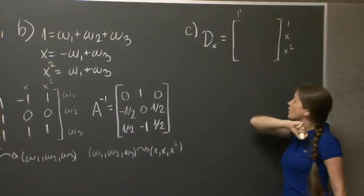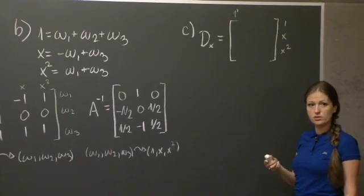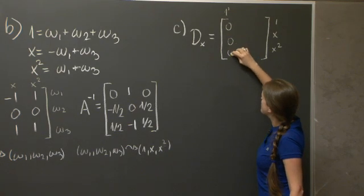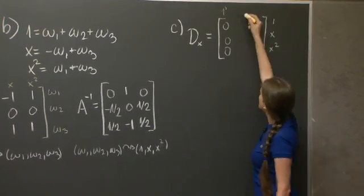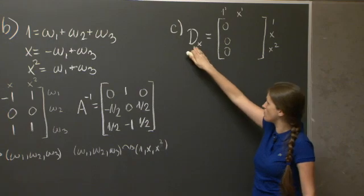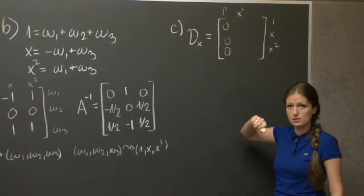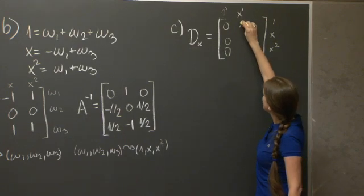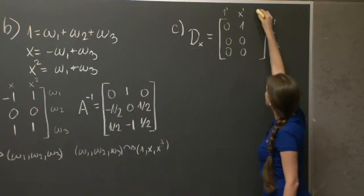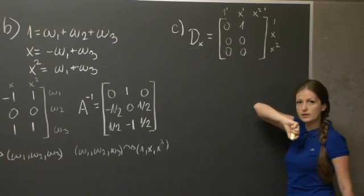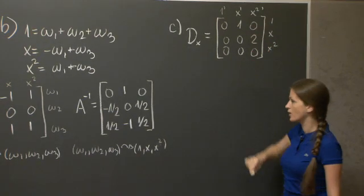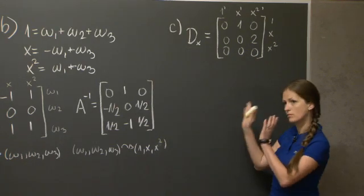So I'm going to work in basis 1, x, x squared. And what I want to express is the transformation of taking derivatives. So here, I'm going to write the vector to which taking derivatives maps the polynomial 1, which is 0. And that's this expressed in the basis 1, x, x squared. In the second column, I'm going to write x prime, the vector to which dx sends the vector x. And that's equal to 1, which expressed in this basis is 1, 0, 0. And here, I'm going to write x squared prime, which is 2x, which expressed in this basis is just this. OK. That one was easy.